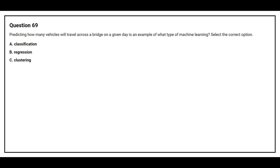Option 69: Predicting how many vehicles will travel across a bridge on a given day is an example of what type of machine learning? Option A: Classification. Option B: Regression. Option C: Clustering. The correct answer is Option B: Regression.